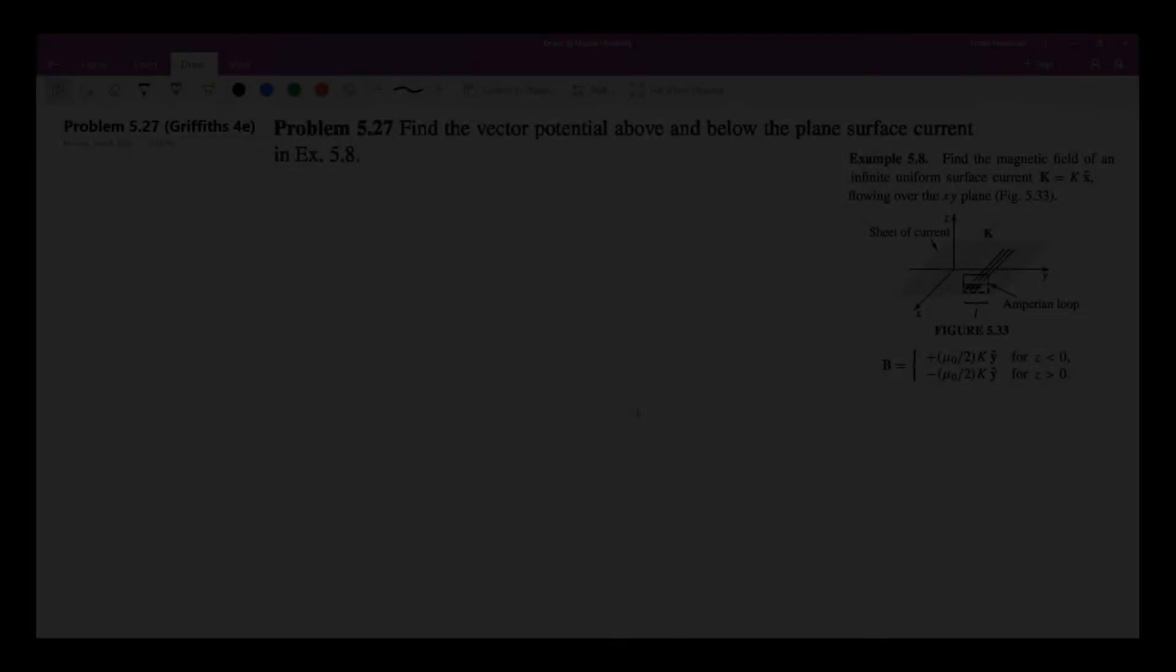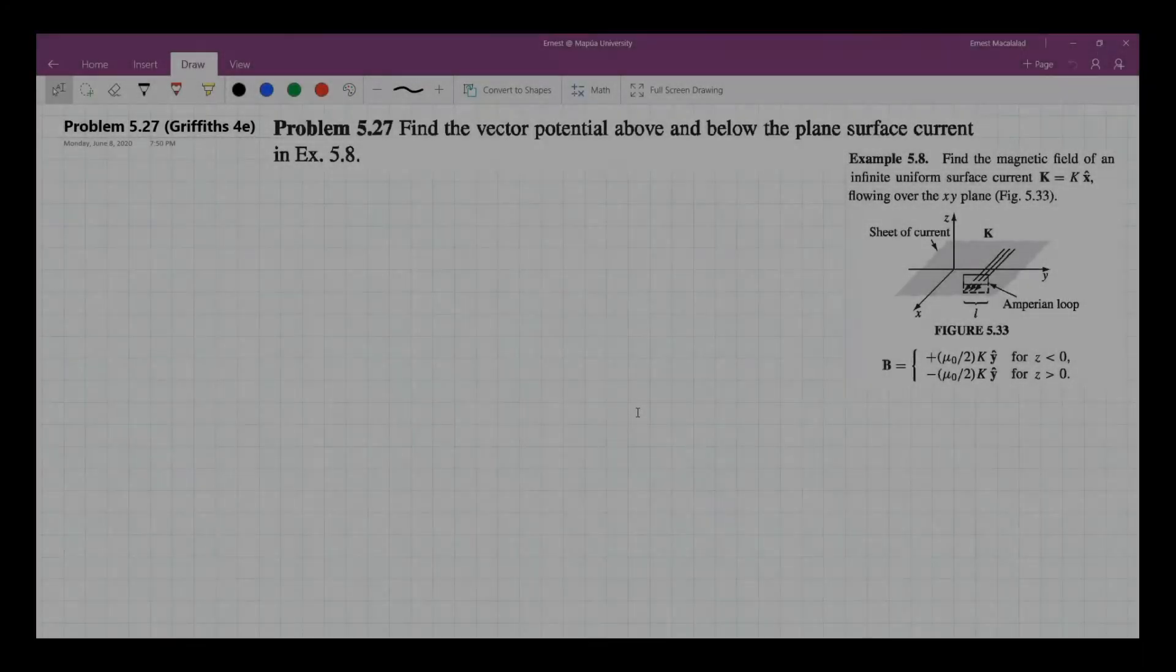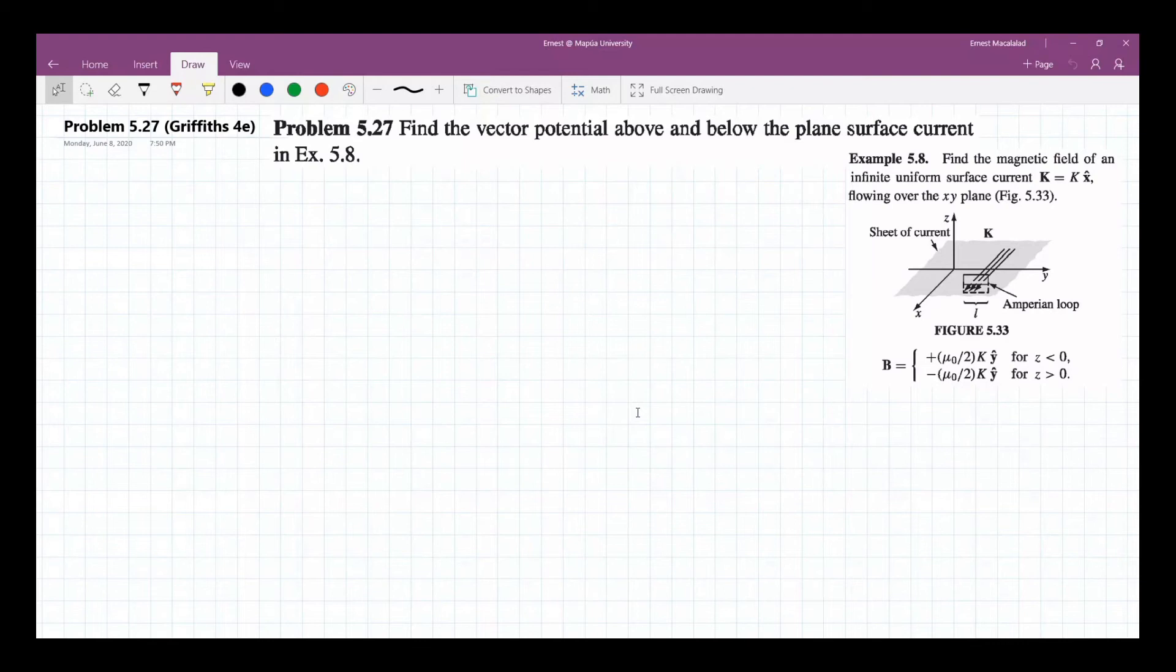So problem 5.57 reads, find the vector potential above and below the plane surface current in example 5.8.